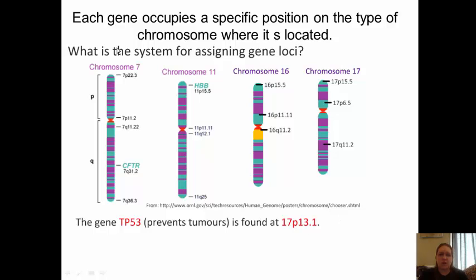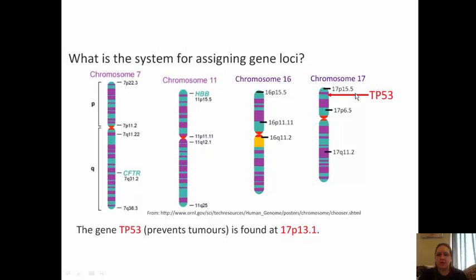Each chromosome has a number — we have 46 chromosomes arranged in 23 pairs. This gene is found on chromosome 17, which is what that first '17' means. Each chromosome also has a centromere. Above the centromere is called the P region, and below is called the Q region — that letter tells you whether you're looking at the top or bottom of the chromosome. The remaining number, 13.1, tells you where within that section. So TP53 is located on chromosome 17 in the P section at 13.1.